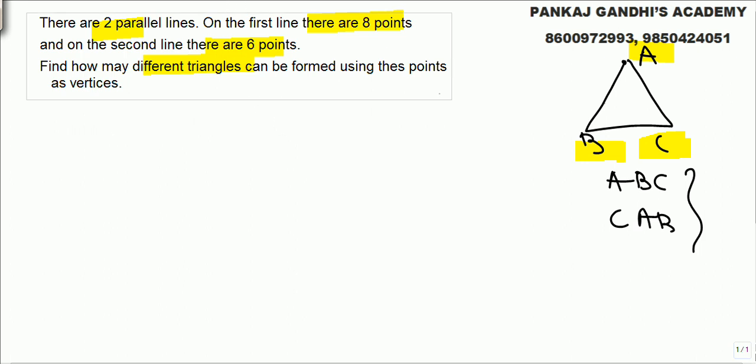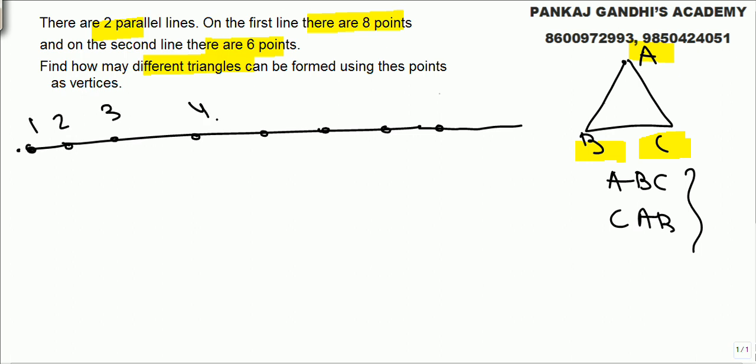I am bad at drawing but assume it to be parallel. We have got eight points on this line: point one, two, three, four, five, six, seven, eight. And on this line we have got six points.